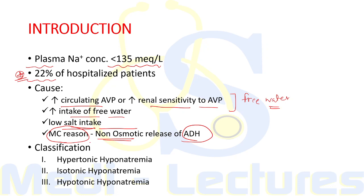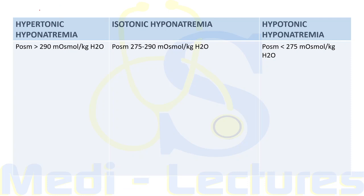Broadly, hyponatremia is classified into hypertonic hyponatremia, where total tonicity is increased despite low sodium; isotonic hyponatremia, where tonicity is normal despite hyponatremia; and hypotonic or true hyponatremia, which is the main focus of this lecture. Hypertonic hyponatremia occurs when osmolality is more than 290 mOsm/kg, isotonic when osmolality is normal at 275–290, and hypotonic when plasma osmolality is less than 275 mOsm/kg.